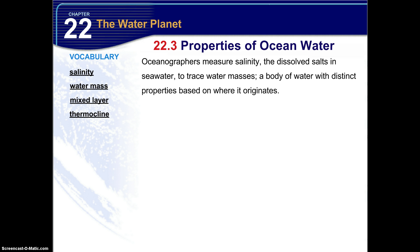Oceanographers measure salinity — the dissolved salts in seawater — to trace water masses, which is a body of water with distinct properties based on where it originates. Just like we did with air masses, their properties were based on where they originate. Same thing with water masses — those properties are based on where it originates.